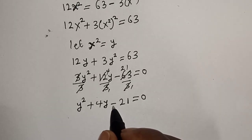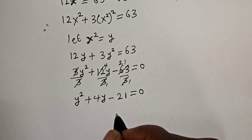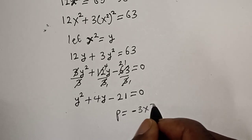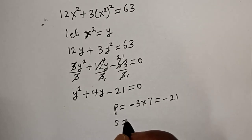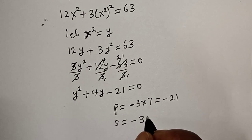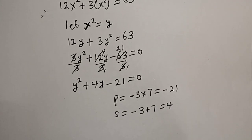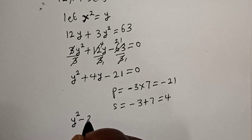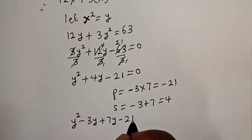Let's solve this using the factorization method. The product must be equal to minus 21 and the sum must be equal to plus 4. So: product = (−3)(7) = −21, and sum = −3 + 7 = 4. Let's substitute: y² minus 3y plus 7y minus 21.